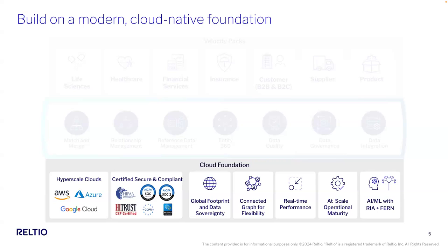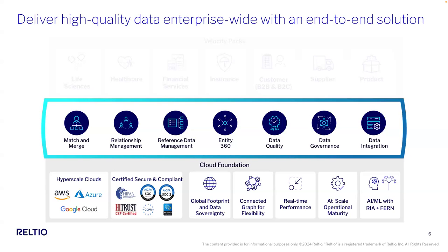Having an integrated approach to data quality is critical. I like to think of it like the children's book 'If You Give a Mouse a Cookie' — if you start using a data quality solution, you're going to wonder how to manage the quality of the data flowing into it. That's where core MDM capabilities like matching and merging to deduplicate come into play. You'll also want to govern the policies creating the rules within your data quality solution — that's where data governance comes in. And you need to integrate across many different systems in a high-volume, real-time fashion, building your own integrations with low-code and leveraging many pre-built digital integrations.